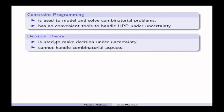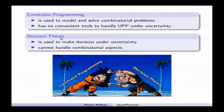On the other hand, you have decision theory, which is used to make decisions under uncertainty but you cannot handle other combinatorial aspects with decision theory. So, to deal with the unit production problem, I somehow merge both constraint programming and decision theory.